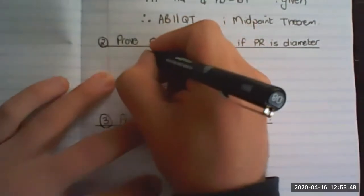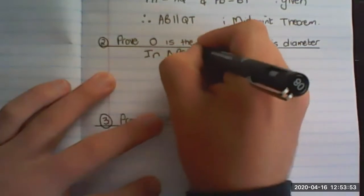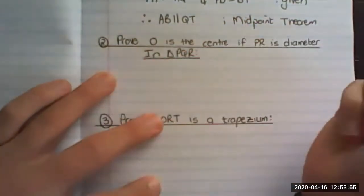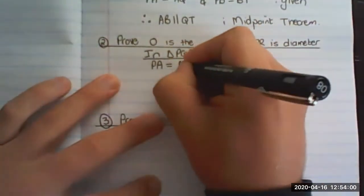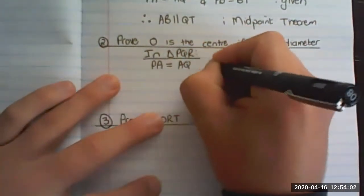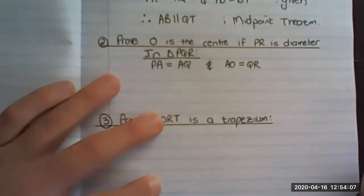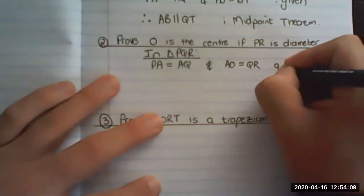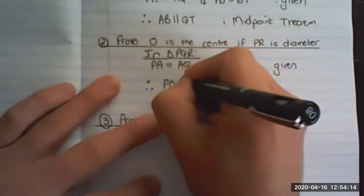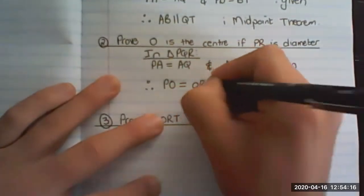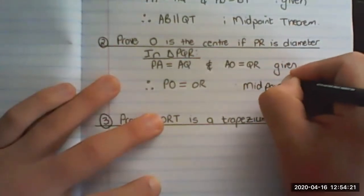We say that in triangle PQR, what we have is PA is equal to AQ and AO is equal to QR. That is given. Therefore, PO is equals to OR, and the reason or what we are using is the midpoint theorem.